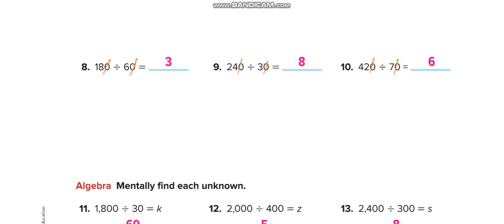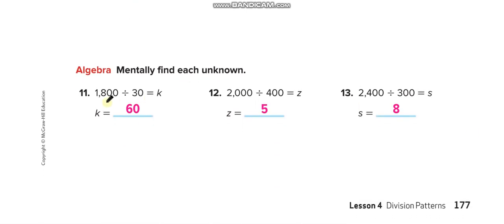Here we can cancel one zero because we have one zero on each side. In this question we can cancel two zeros because both numbers have two zeros. So: 180 — remove one zero — 18 divided by 3 is 6, put the zero back for 60. In the next question 24 divided by 3 is 8. But in another question, if removing the zero gives us a number less than the divisor — like 2 divided by 4 — that gives 0.5.